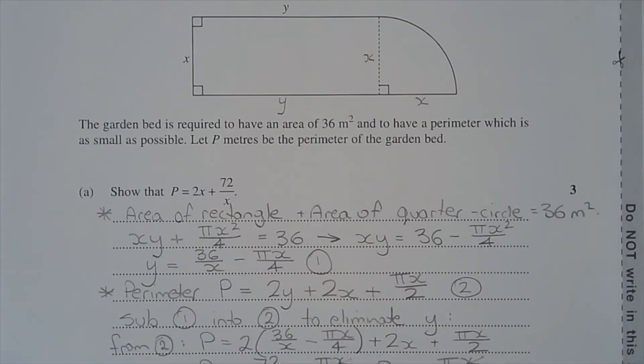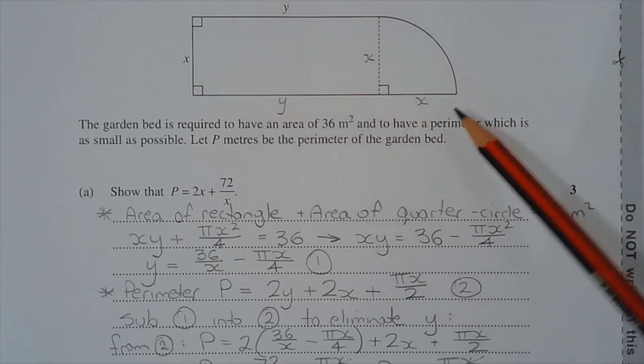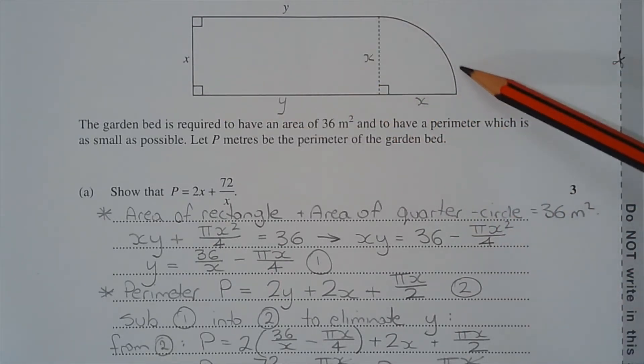Our next consideration is the perimeter of this composite shape. The perimeter p is equal to 2y plus 2x plus π x over 2. There's y, there's another y, that's our 2y. We have an x here and an x there, so there's the 2x.